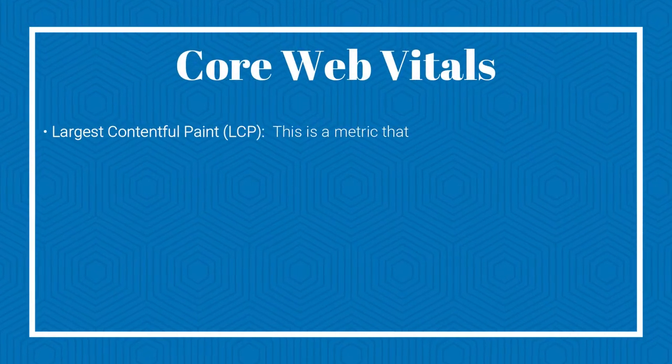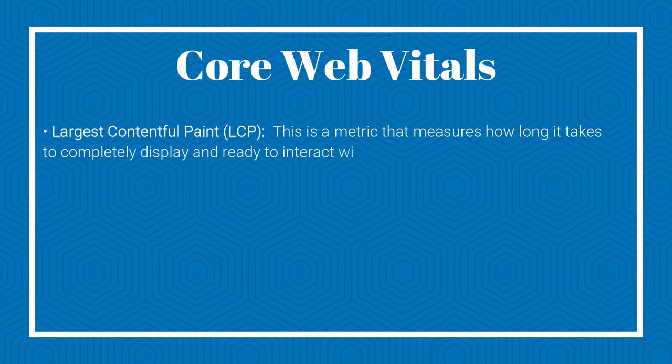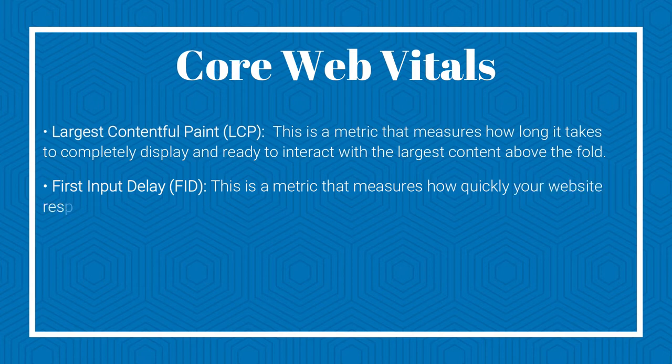Web Vitals are initiatives by Google to provide unified guidance to website owners for quality signals that are essential to delivering a great and safe user experience on the web. And at this moment, metrics that make up Core Web Vitals are three. The first one is Largest Contentful Paint or LCP. This is a metric that measures how long it takes for your website to completely display and ready to interact with the largest content above the fold. The second one is First Input Delay or FID. This is a metric that measures how quickly your website responds when your users click or tap on something.